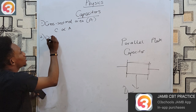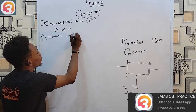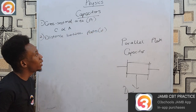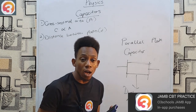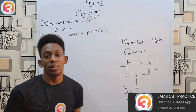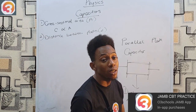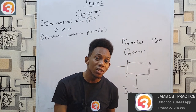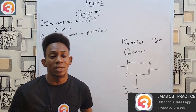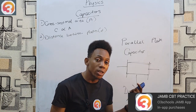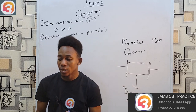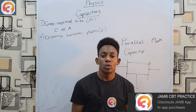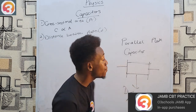The second factor is the distance between the plates. The closer the plates are, the bigger the capacitance; the further apart the plates are, the smaller the capacitance. Capacitance decreases as the space between the plates increases, and increases as the space decreases. Mathematically, we refer to that as an inverse relationship.